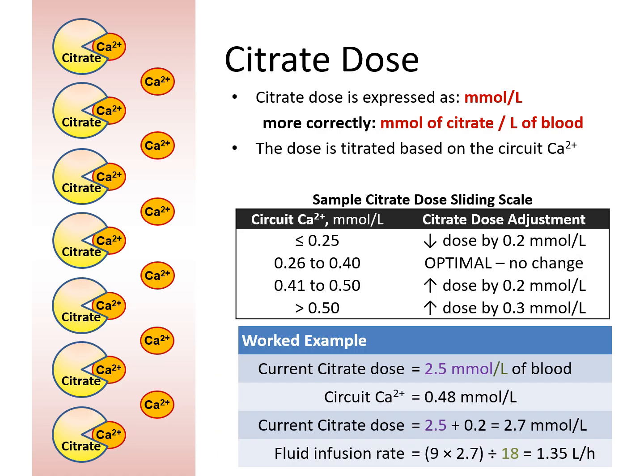The dose of citrate should be titrated based on the circuit calcium level. The circuit calcium, or circuit free ionized calcium, is measured every 4 to 6 hourly. This is a sample citrate dose sliding scale which I use in my center.